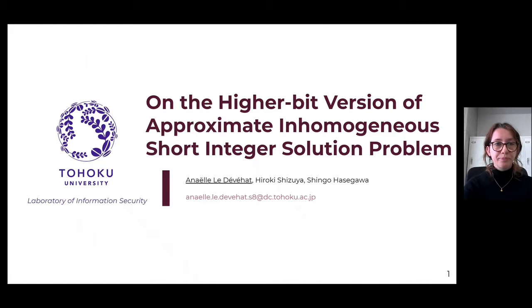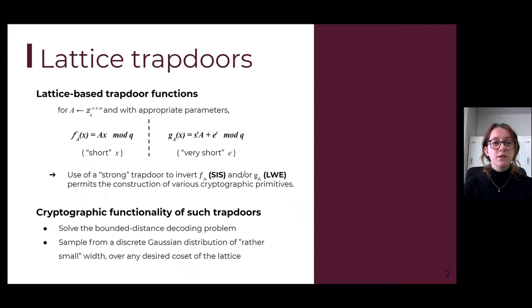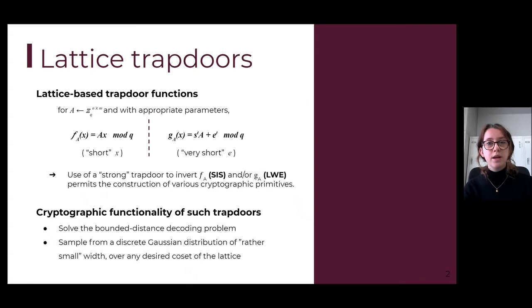I would like to speak about lattice trapdoors and especially about lattice-based one-way functions. Two famous one-way functions in lattice-based cryptography are: first, the hash function f, which is surjective, and then the function g, which is injective. Both these one-way functions are securely realized respectively on the SIS problem and the LWE problem. This kind of lattice-based trapdoor function, which can be inverted with some trapdoor information, permits constructing various cryptographic primitives and allows for certain cryptographic functionalities.